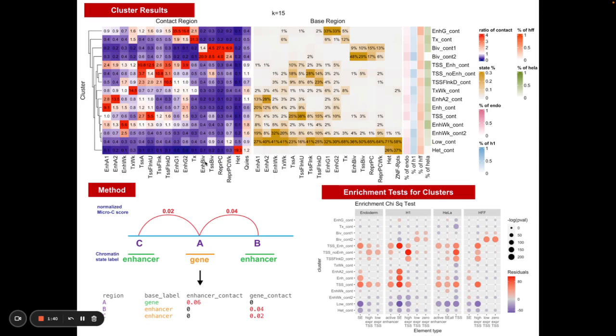One of the interesting clusters that we pulled out here would be these two bivalent contacting clusters which have very high enrichment in bivalent contact. Another interesting pattern we see is that the enhancer contacting clusters split out into several subtypes. For example, here we've got an enhancer A2 cluster which clusters mostly with the enhancer A2 contacting labels versus an enhancer A1 contacting cluster.